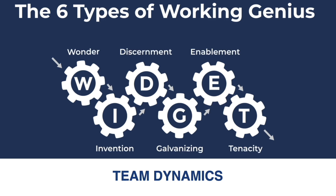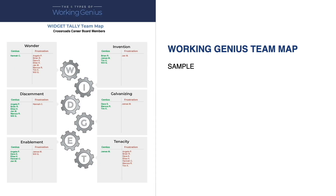One of the things that really sets Working Genius apart from other models is the team dynamics — how you get different team members to work together based on their working geniuses. One of the benefits is the working genius team map. You see all of the working geniuses in boxes, separated by responsive geniuses on the left and disruptive geniuses on the right. You can see whose geniuses and frustrations fall in which areas, and where the team is light on certain geniuses. In this example, wonder is very underrepresented, while discernment and enablement are abundant. Wonder and tenacity show a lot of frustrations among the team.